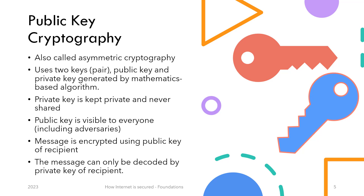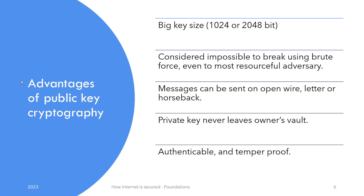Once encoded, the message can only be decoded using the private key of the recipient — even the sender can't decode it. The sender has its own key pair, but those are used for other operations we'll look into later. The first advantage is the large key size of 1024 or 2048 bits, compared to the standard 128 or 256 bits. The message is virtually impossible to break using brute force, even for a very resourceful adversary.